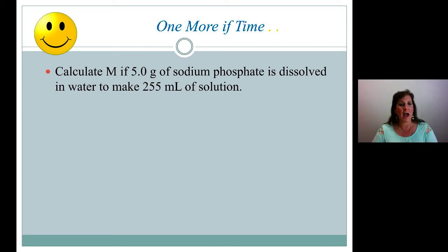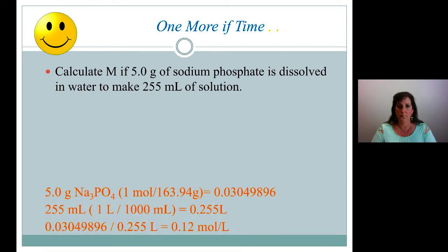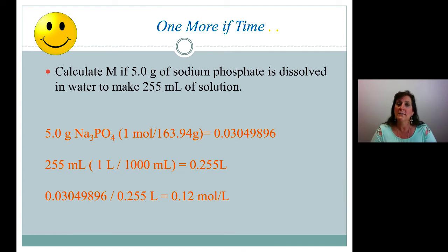Okay. I hope you hit pause and gave it a try. So hopefully you've added up your Na3PO4. And you got 163.94 grams in that mole. So we have our 5.0 grams of sodium phosphate times 1 mole over 163.94 grams. Grams cancel.